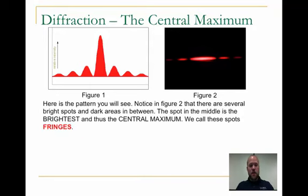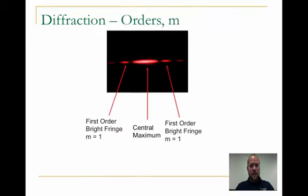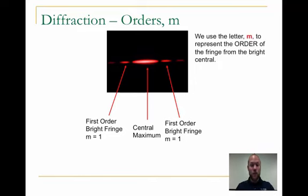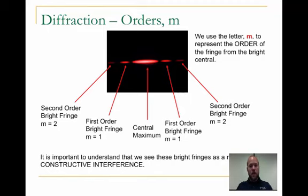A graph on the left here shows what it looks like with the relative intensity between the different bands. Notice how in figure 2, this is the picture that I showed before, there are several bright spots and dark areas in between. The spot in the middle is the brightest, and so we call that the central maximum, and we call those smaller spots fringes. Notice the intensity is a bit less in these fringes. We call these bright spots different orders of diffraction. So the first bright spot is called the first order, the second bright spot the second order, and so forth. We call that M1. We use the letter M to represent the order of the fringe from the bright central, and so you have M equals 2 as the second order bright fringe. It's important that you understand that the bright fringes are a result of complete constructive interference.